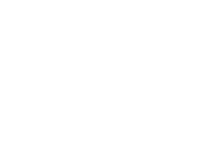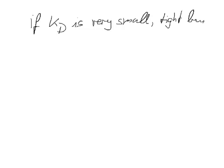So we can say, if Kd is very small, there is tight binding of the inhibitor to the enzyme.